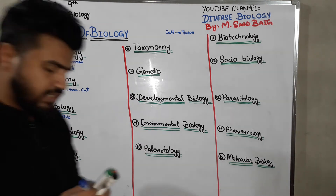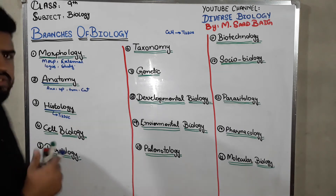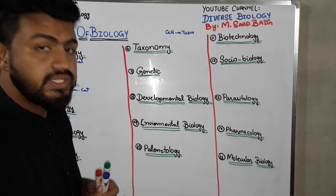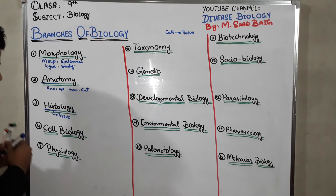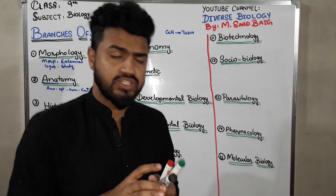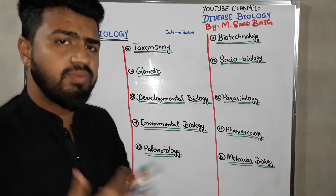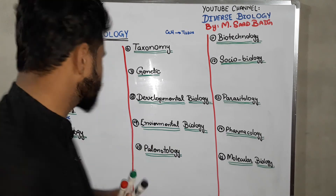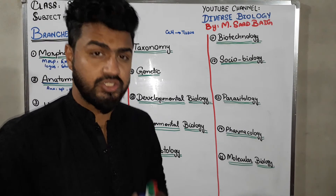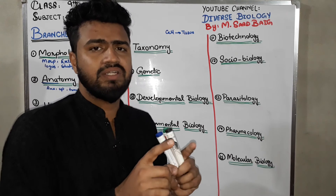Next branch is cell biology. 'Cell' means any basic living unit, and 'biology' means study. So if we talk about the study of a single cell — its structure, how it functions, its appearance, where it is found — the study of all that is called cell biology. Basically, it is the study about the structure and function of the cell in a living organism.